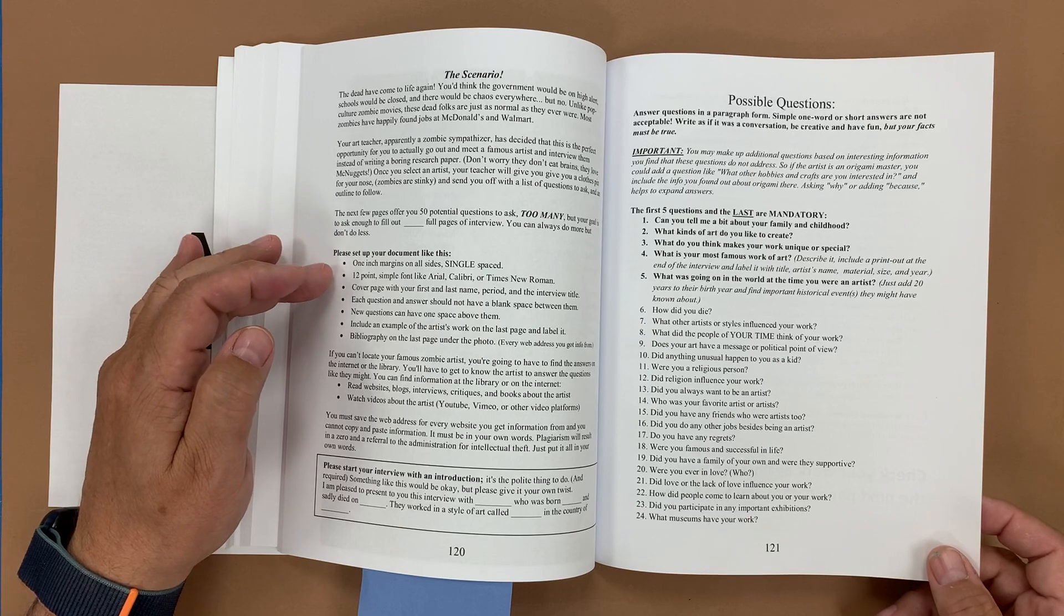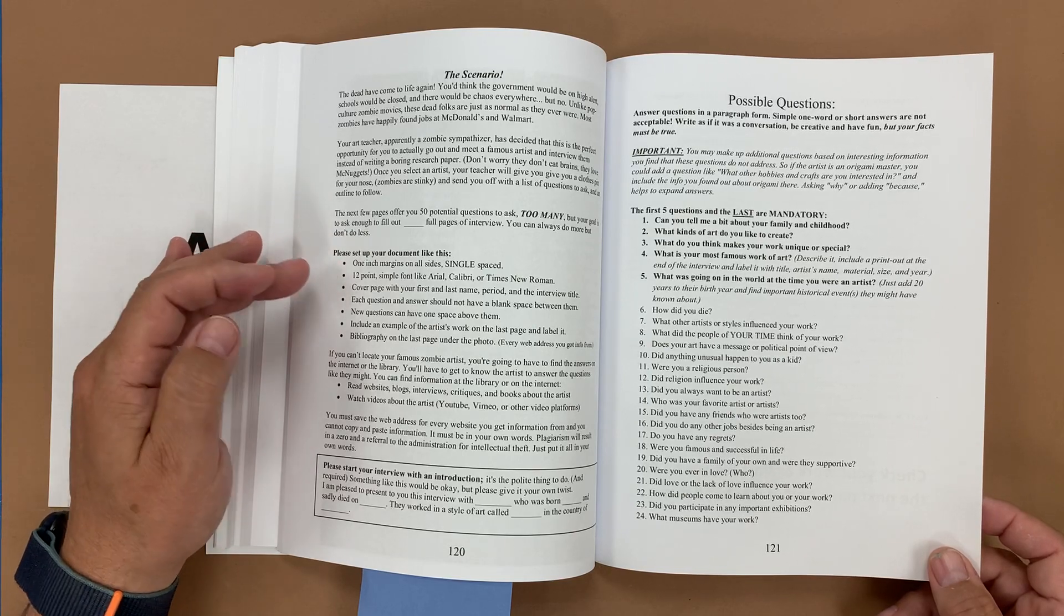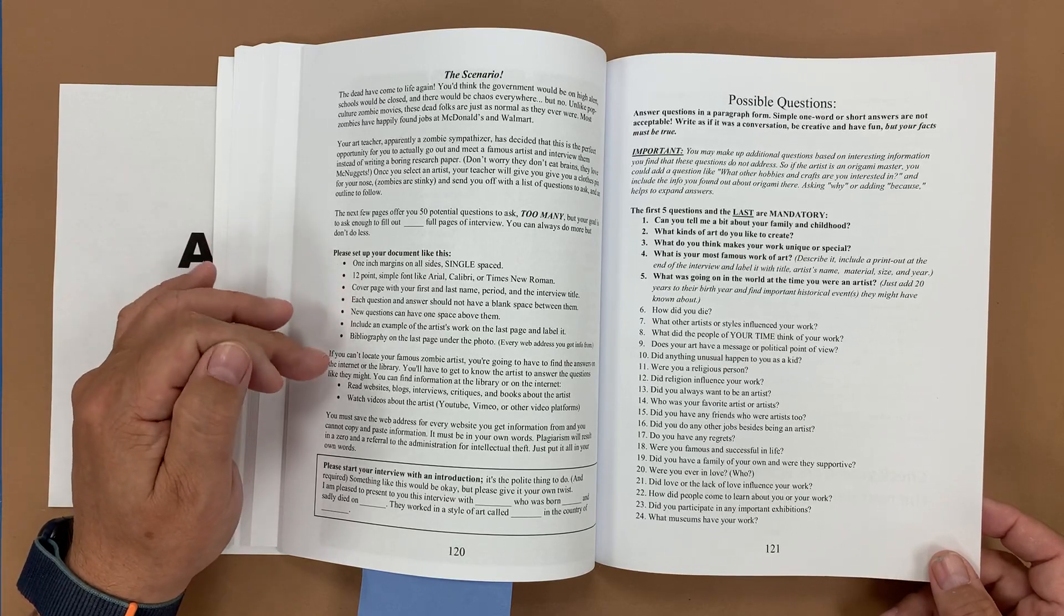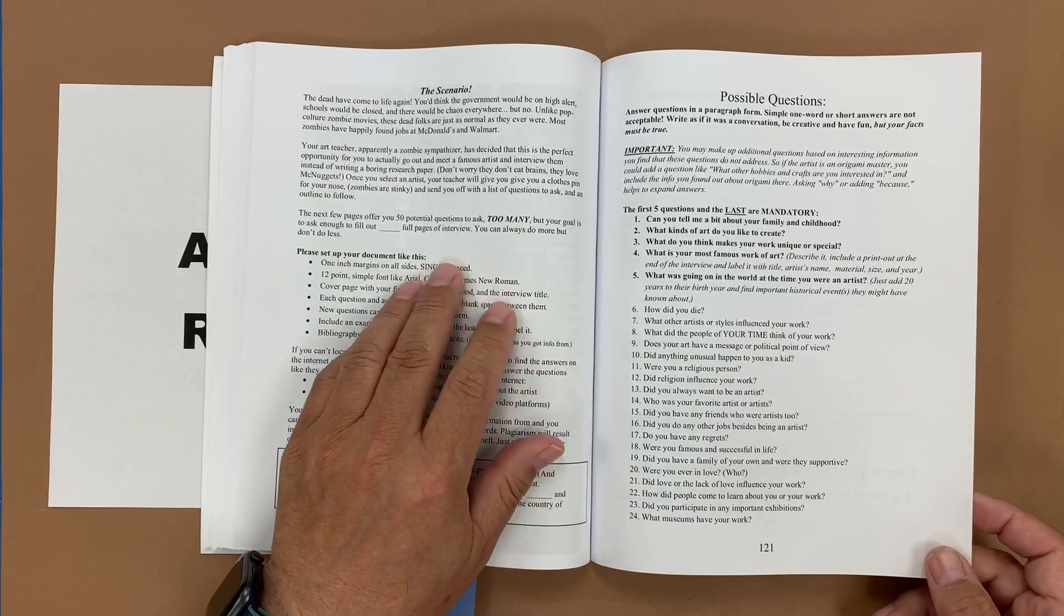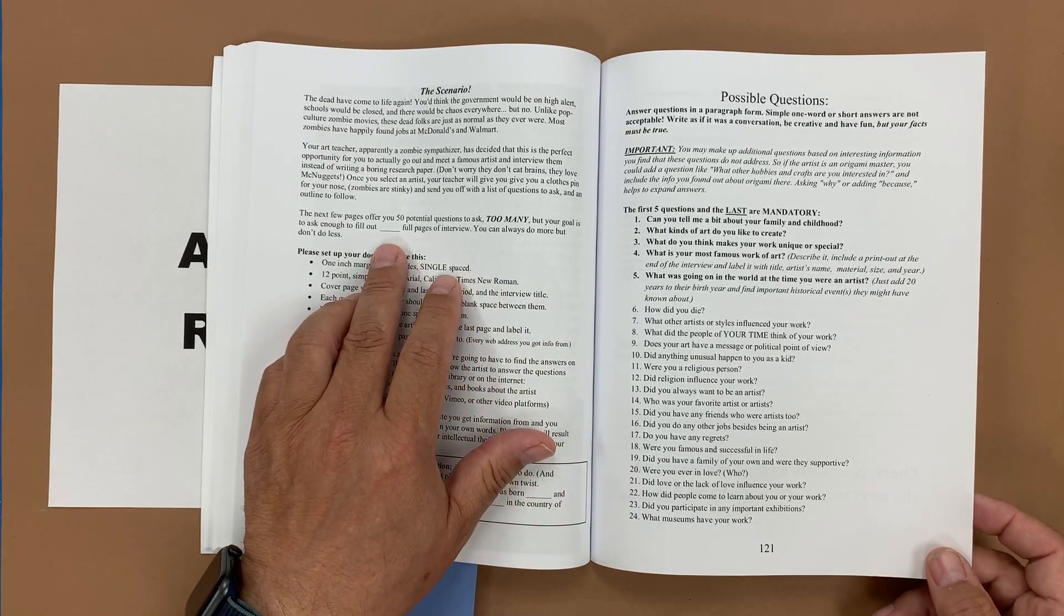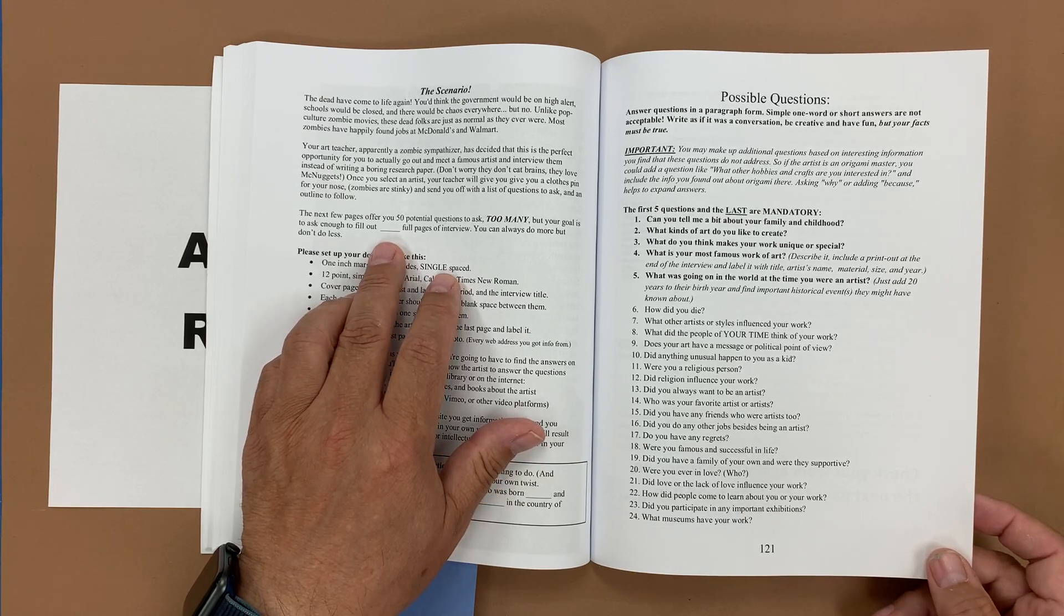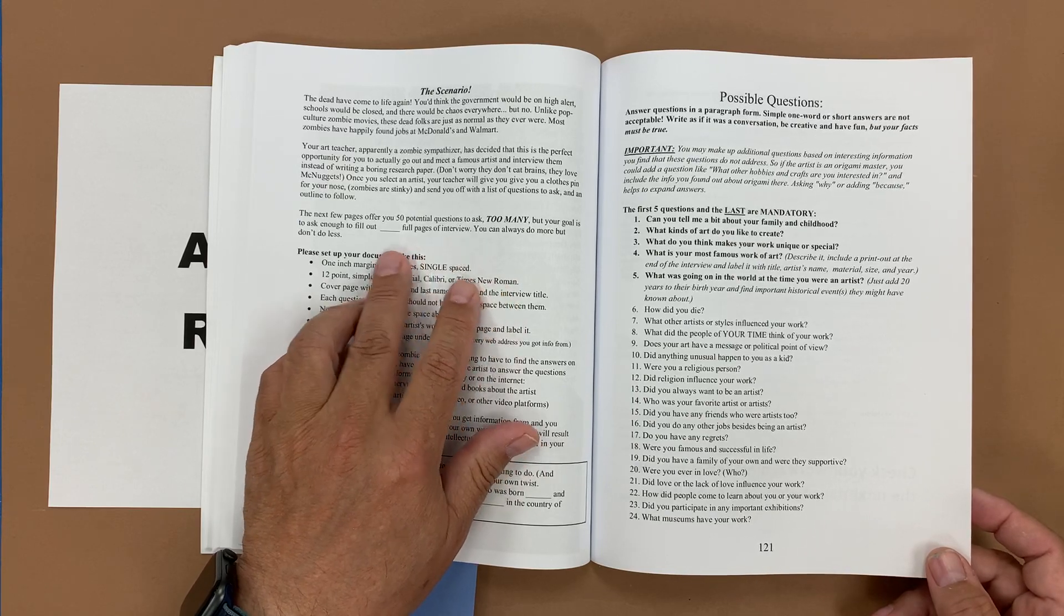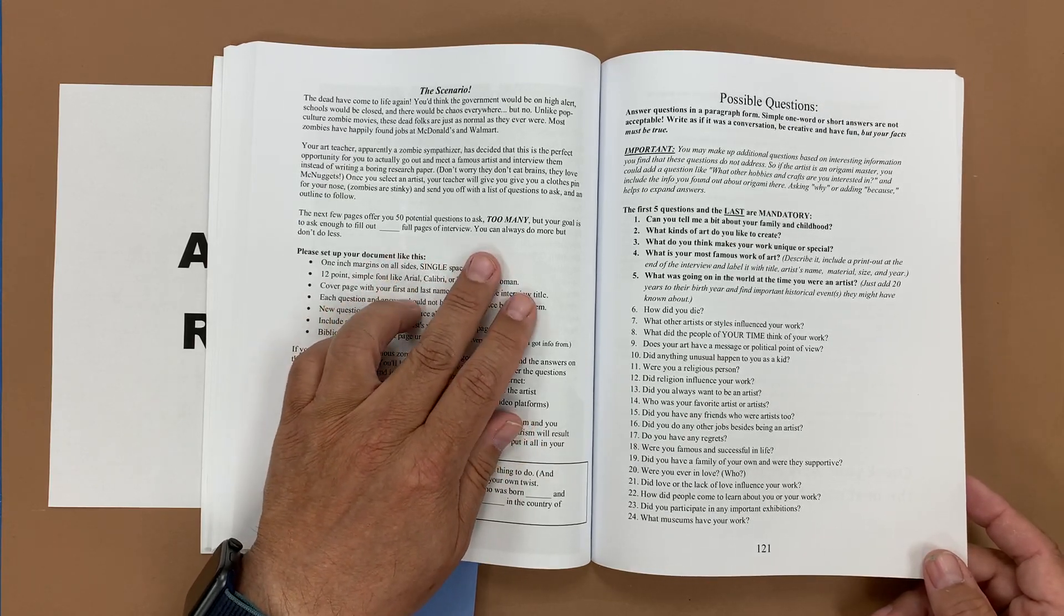We have the layout expectations about one inch margins, single space, twelve point font, etc. And you can determine how many pages you want your students to do. In my high school session I have students do two pages of full interview for a C and three pages would get them the A.